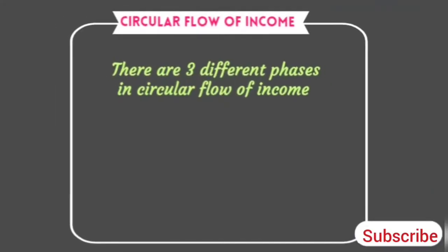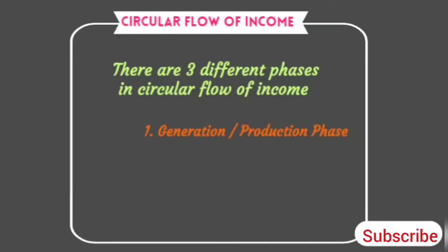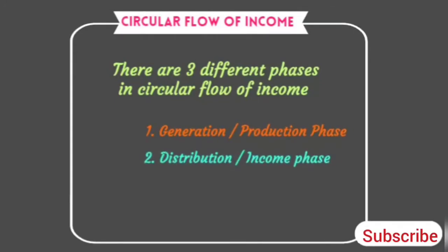There are three different phases in Circular Flow of Income. First, Generation or Production Phase. Second, Distribution or Income Phase. Third, Disposition or Expenditure Phase.